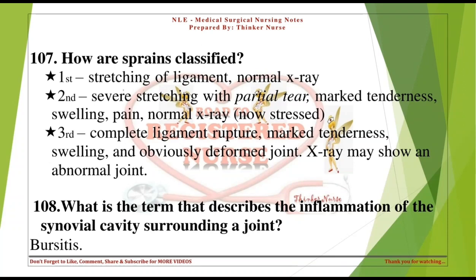How are sprains classified? 1st degree: stretching of ligament, normal X-ray. 2nd degree: severe stretching with partial tear, marked tenderness, swelling, pain, normal X-ray. 3rd degree: complete ligament rupture, marked tenderness, swelling, and obviously deformed joint; X-ray may show an abnormal joint.